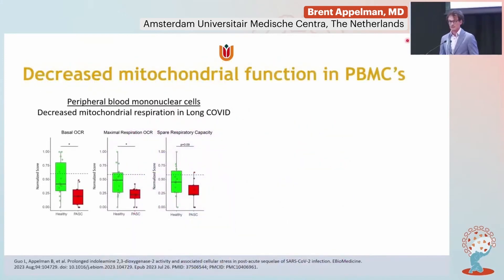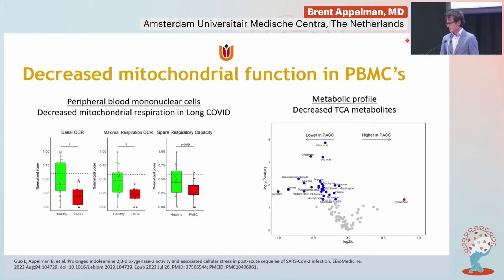We also looked for damage markers using mitochondrial respiration of the immune cells. Similar to what we saw in skeletal muscle tissue, we found diminished mitochondrial respiration in the immune cells of Long COVID patients — these mitochondria are not functioning properly. Metabolomics also showed that certain TCA cycle products, including citric acid, are severely downregulated in Long COVID patients compared to healthy controls.